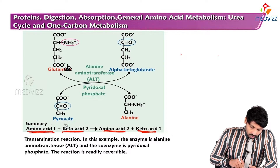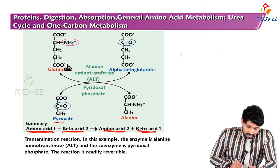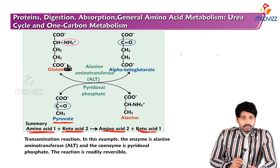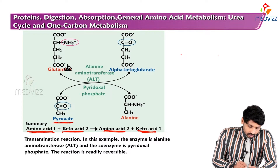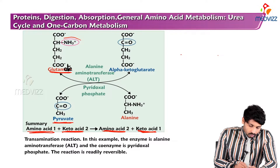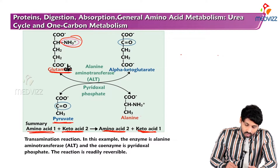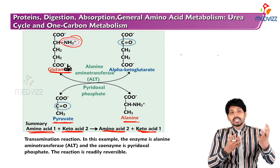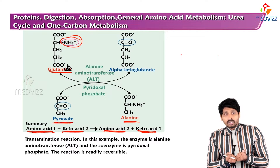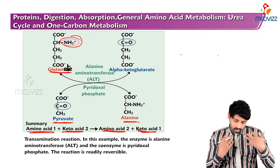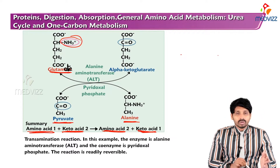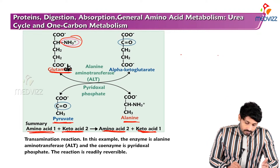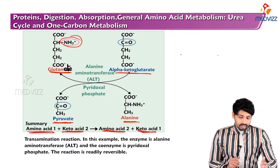In the diagram, pyruvate is the ketoacid and the donor amino acid is glutamic acid. The amino group from glutamic acid will be given to pyruvate, so pyruvate will be converted to alanine. Once glutamic acid donates its amino group, it will be converted to alpha-ketoglutarate.